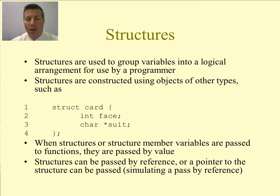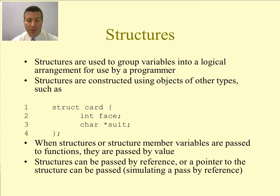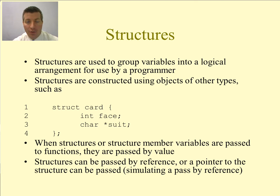Structures are created using objects of other types. So you see the example here. I have a struct that I've named card. Inside of it, I have an integer representing the face of the card, and I have a C string — a char star — representing the suit of the card.